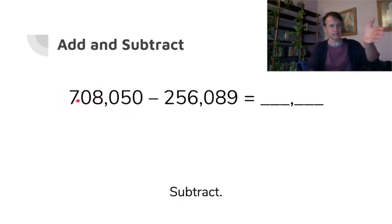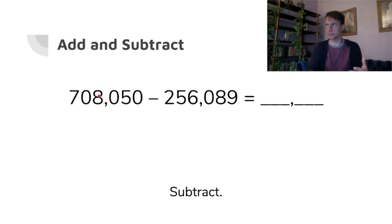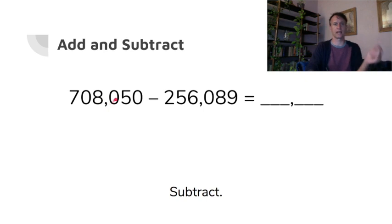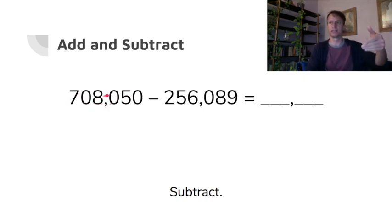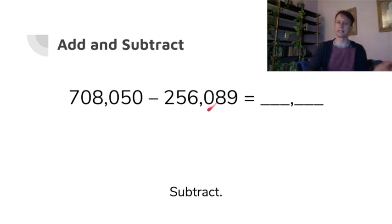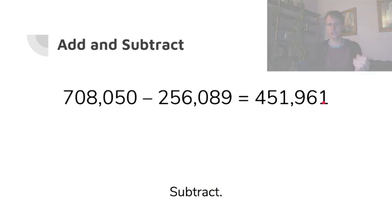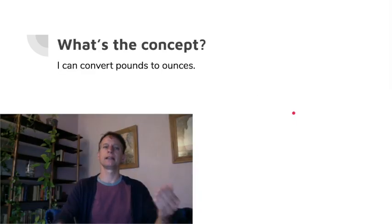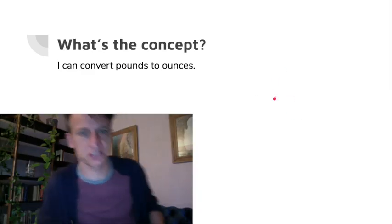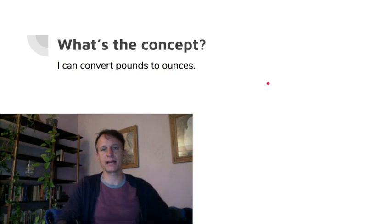Here's another one to subtract. Read it as a standalone number: seven hundred eight thousand fifty — notice there's no 'and' in here. Sometimes people say 'seven hundred and eight thousand and fifty,' but to read it properly: seven hundred eight thousand fifty. Minus two hundred fifty-six thousand eighty-nine — you should get four hundred fifty-one thousand nine hundred sixty-one.